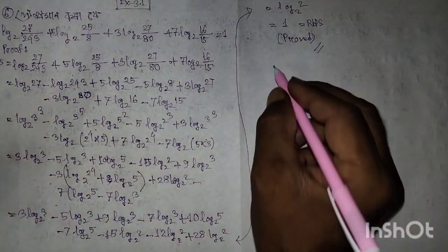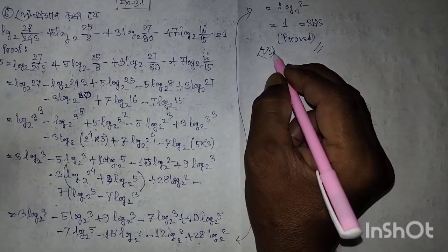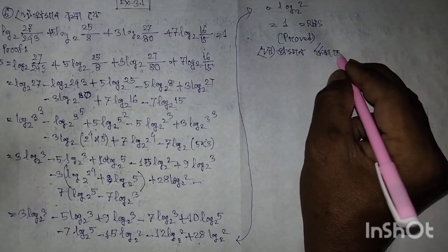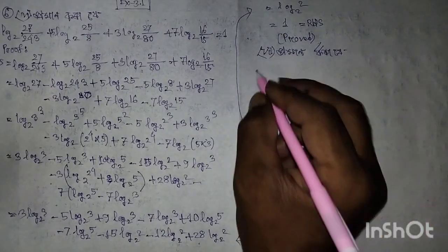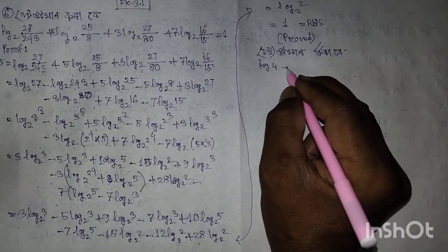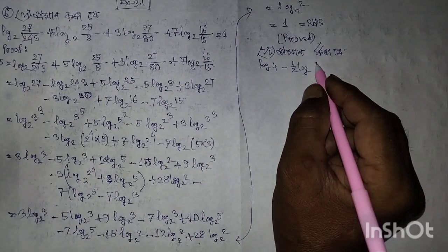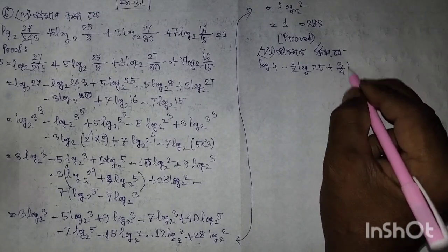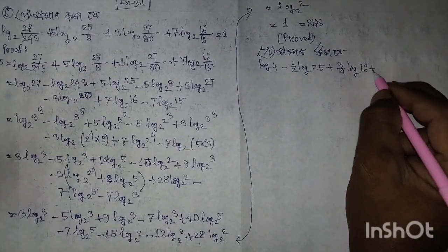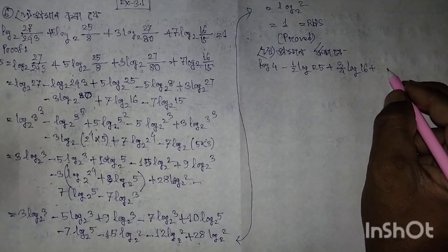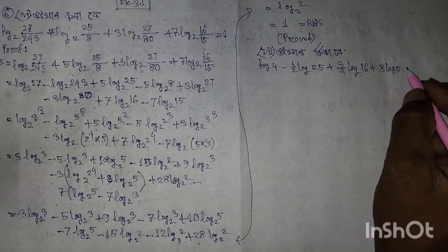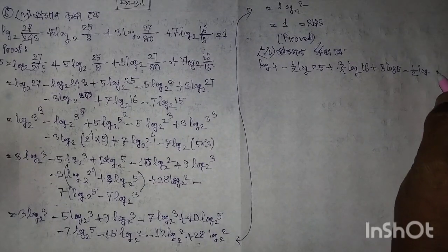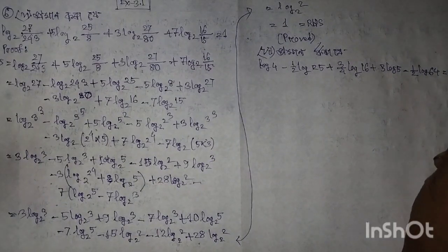Next, equation 7. Log 4, minus half log 25, plus 3 by 4 log 16, plus 3 log 5, minus half log 64, equal to 2. Proof.